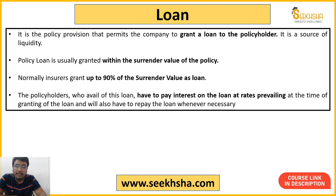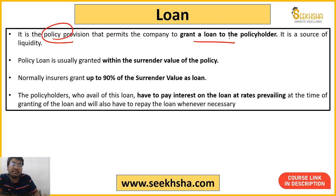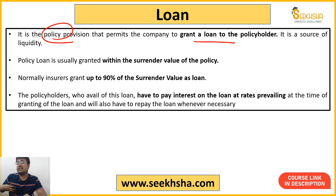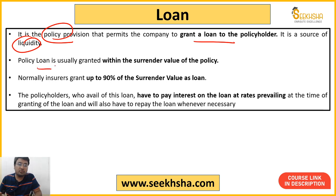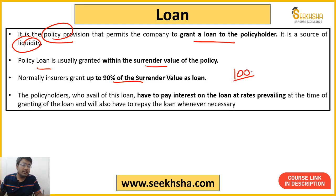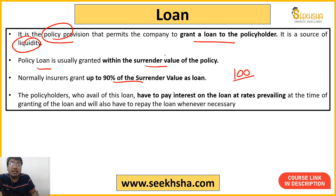Next comes loan. Many policies have a provision where the policy-issuing company — or it may be specially mentioned, or through a bank — allows you to use that policy to take a loan. For example, if you have an LIC life insurance policy and you need liquidity, you can mortgage that policy and take a loan of up to 90% of your surrender value. So if your policy's surrender value is ₹100, you'll get around ₹90 as a loan. You also have to pay interest just like any other bank loan.